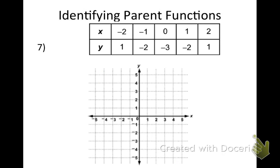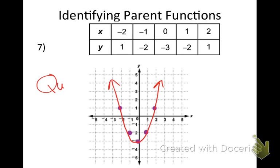Let's try number seven. I have the coordinates: (-2,1), (-1,-2), (0,-3), (1,-2), (2,1). I connect my dots. What type of graph is this? That is a quadratic. How is it shifted from its parent function? Usually the parent function starts at (0,0), so this one is shifted down 3. It's a quadratic function shifted down 3.